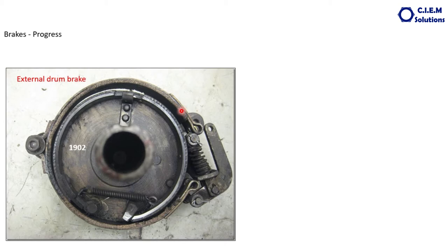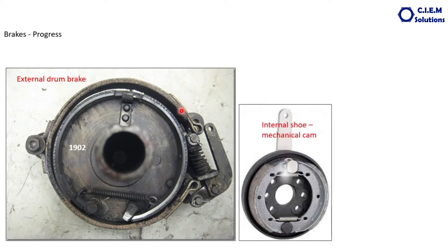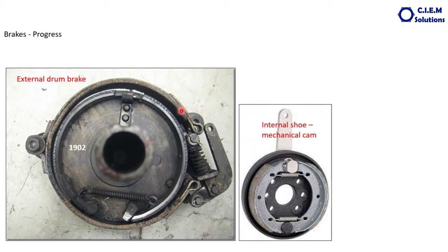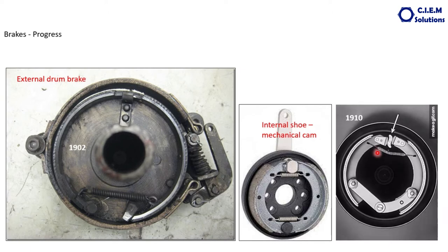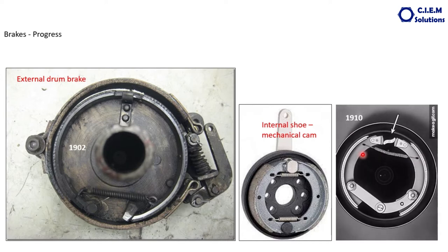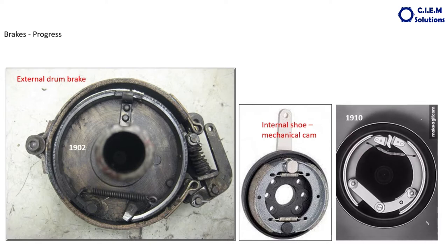As there were challenges in maintaining this brake system, further development led to the introduction of the internally expanding brake shoe. The external brake band holds the rotating drum externally. The next development was to hold the drum internally by expanding the brake shoe, which carries friction material, making the shoe expand outward. This works via a mechanical cam: the cam moves, the brake shoe expands and holds the rotating drum. By 1910, this system was introduced.